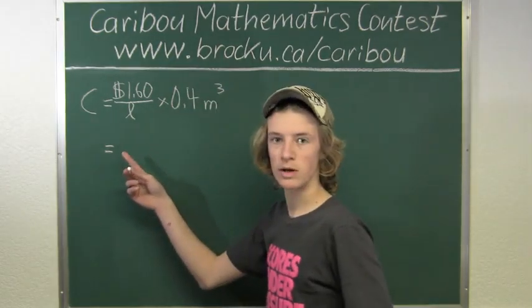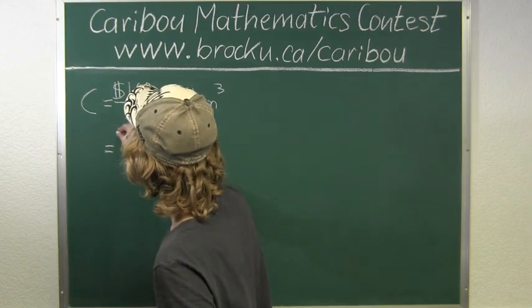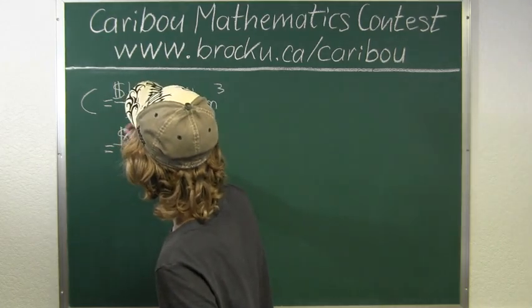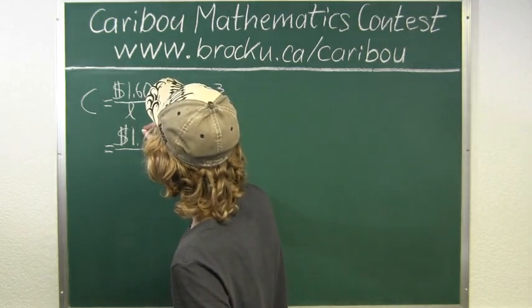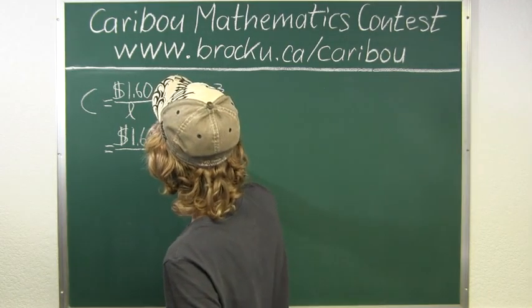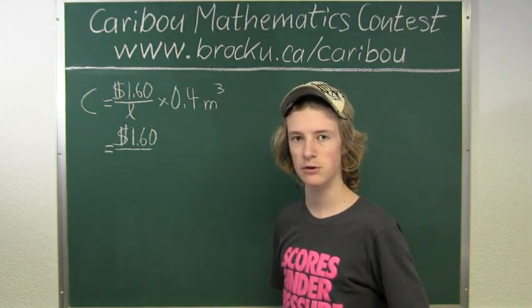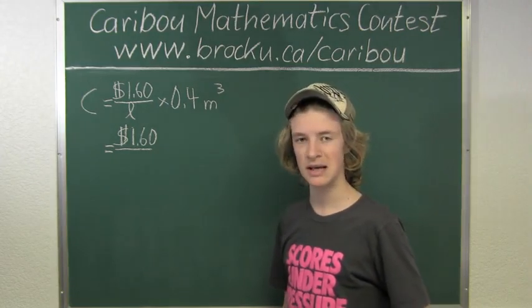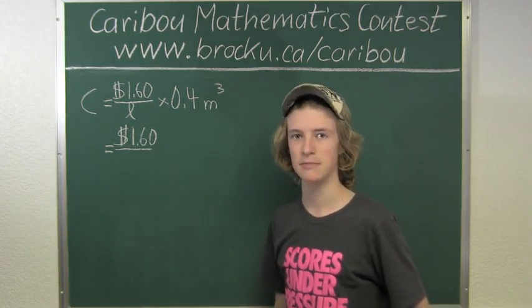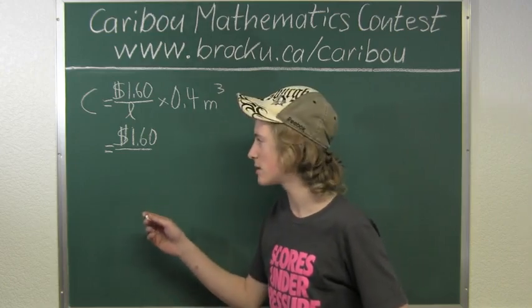So we will still have $1.60. But instead of liters, we know that one liter is the volume of a cube with side length 10 centimeters. So the volume would be 10 centimeters times 10 centimeters times 10 centimeters, which can also be written as (10 cm)³.